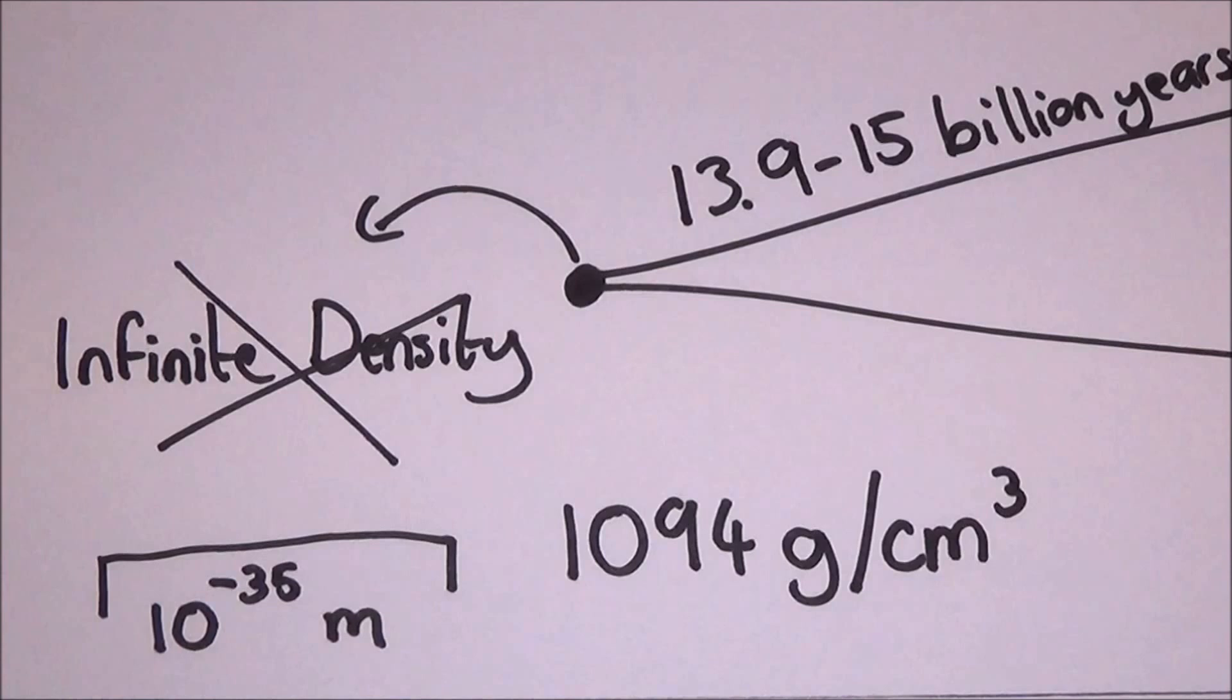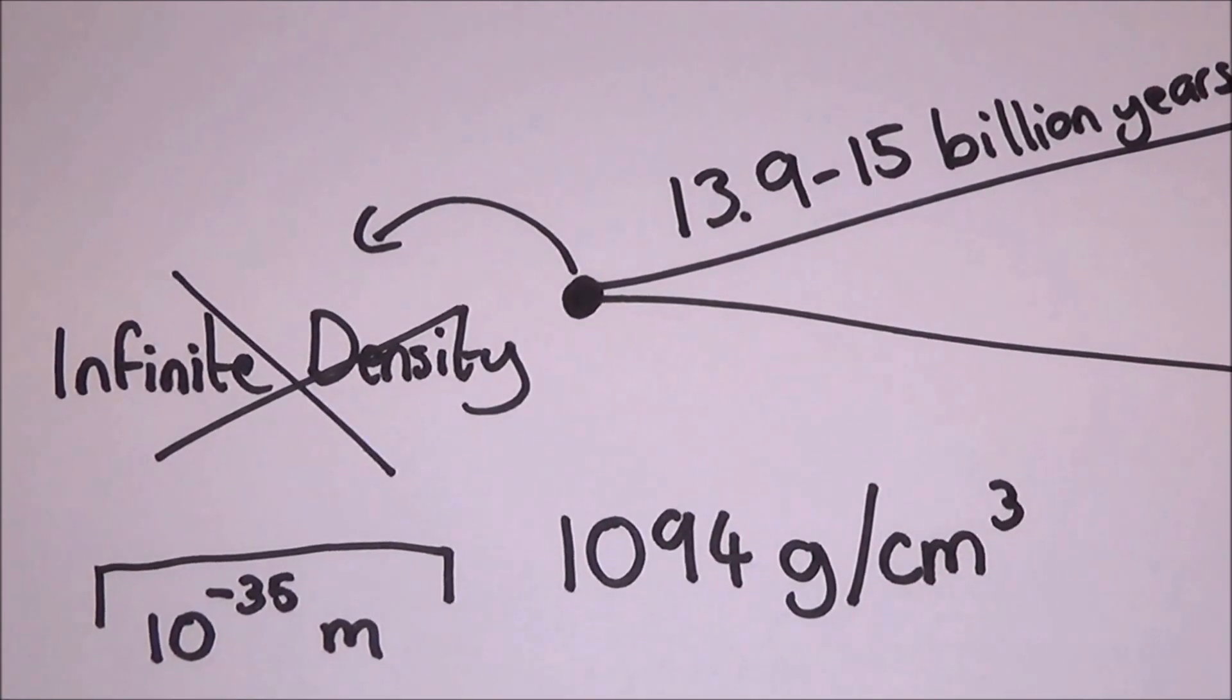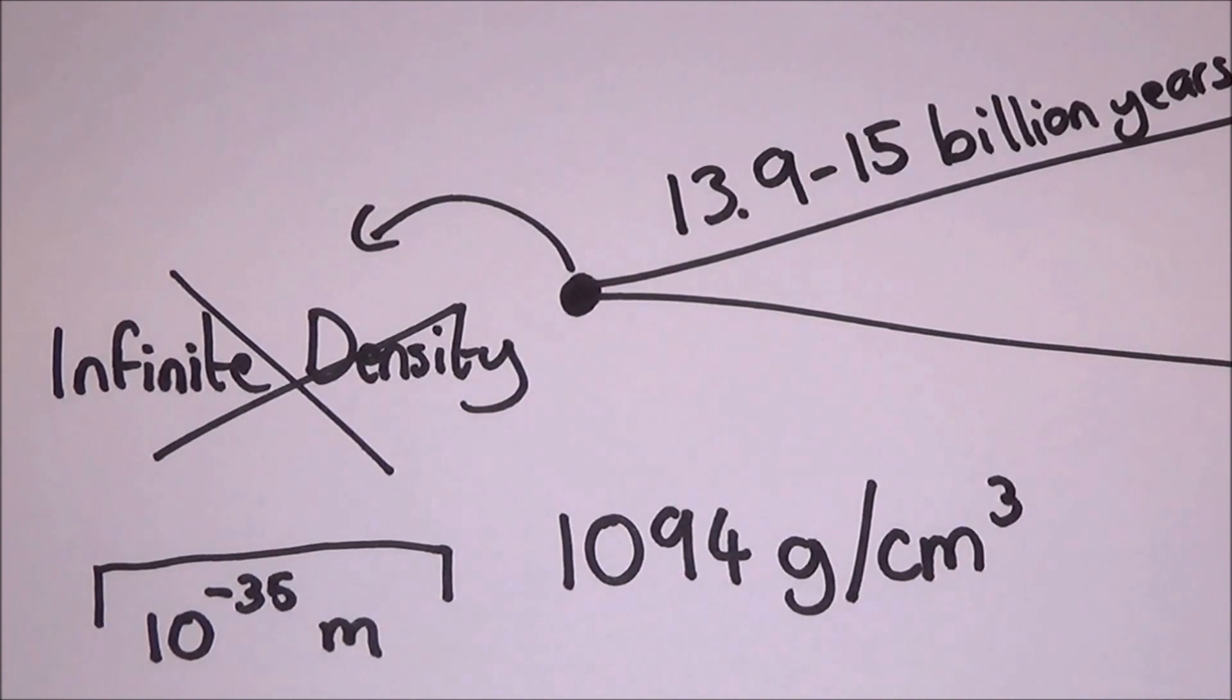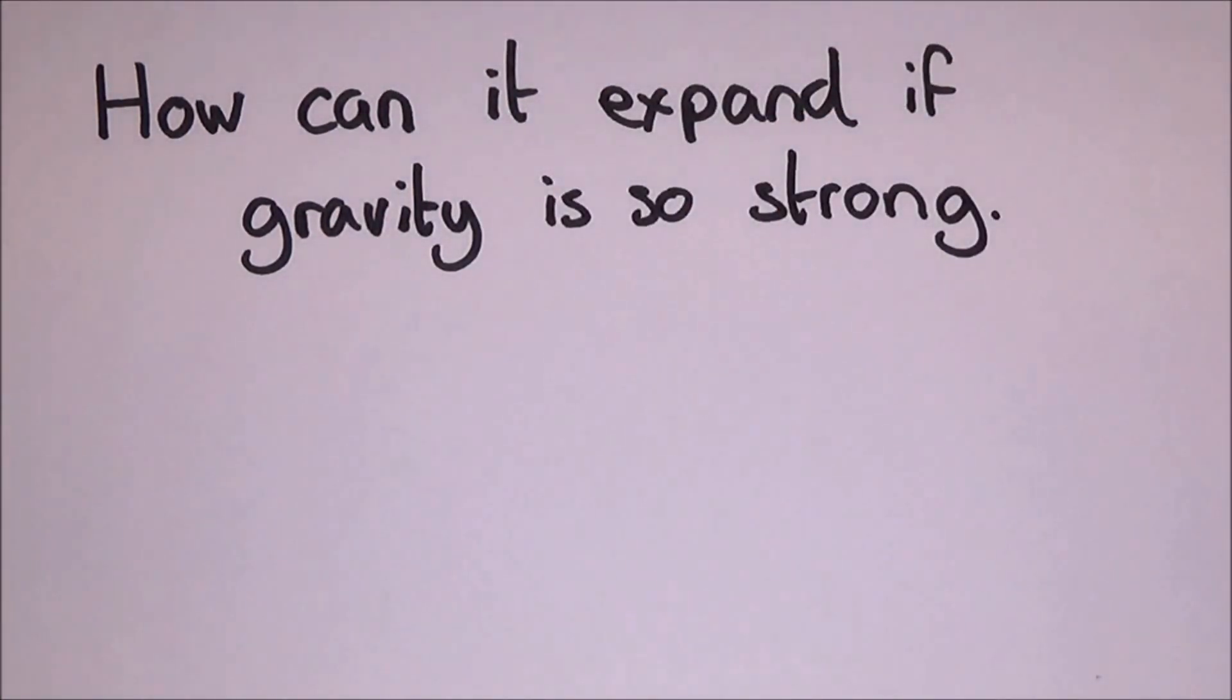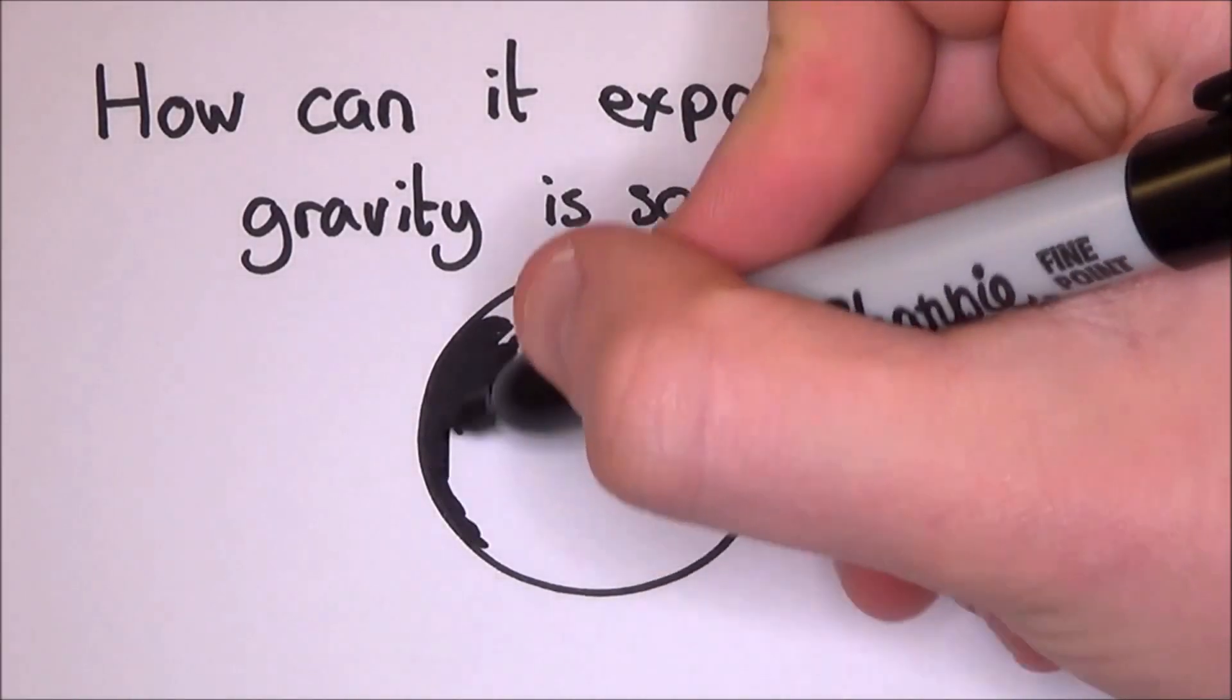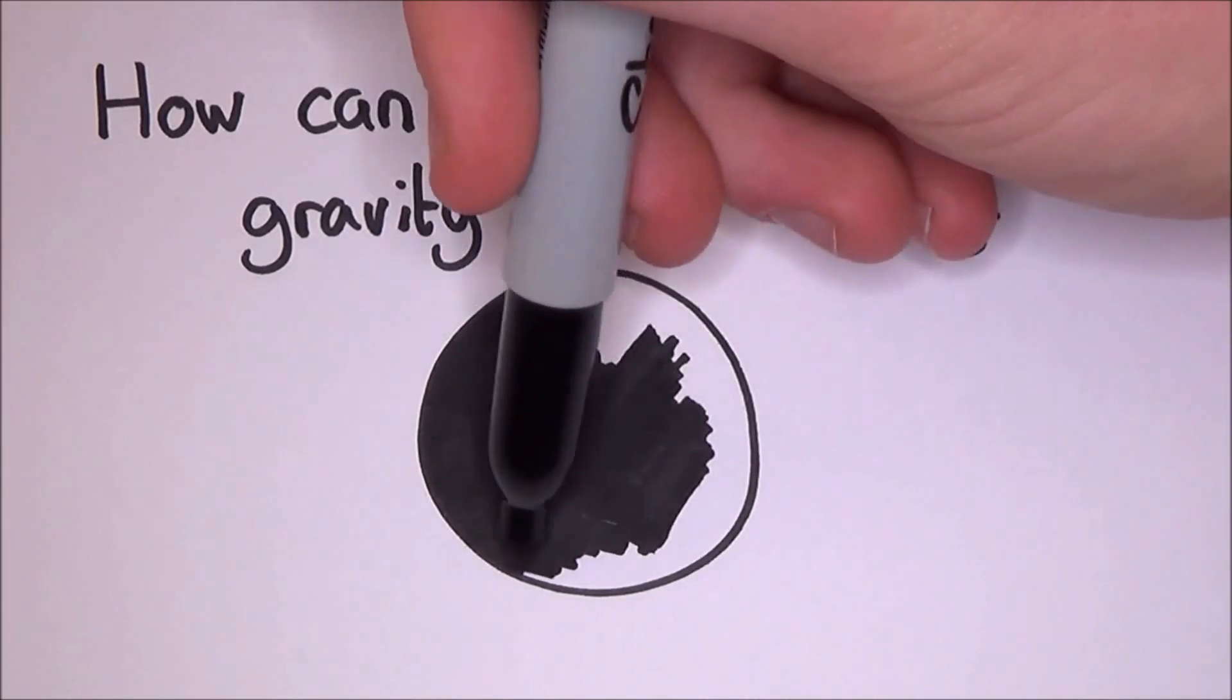These are actually the limits of size and density set by quantum physics. You can't get smaller and you can't get denser. This led to an idea. How could anything that dense expand? It would have a huge gravitational force which would hold everything in place and probably turn it into a black hole as soon as it appeared.